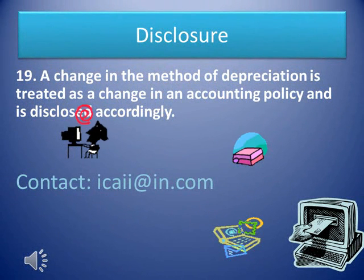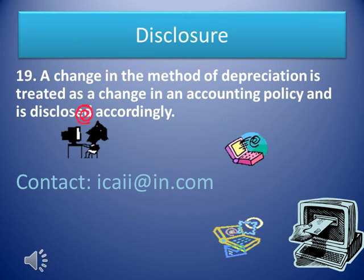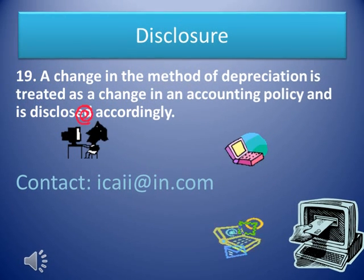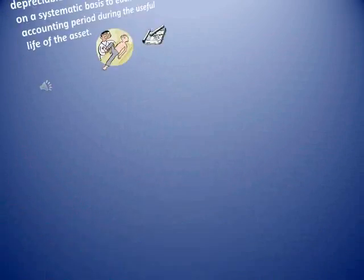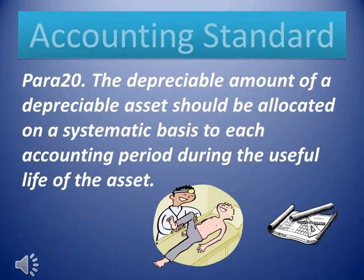Para 19. A change in the method of depreciation is treated as a change in an accounting policy and is disclosed accordingly. Para 20. The depreciable amount of a depreciable asset should be allocated on a systematic basis to each accounting period during the useful life of the asset.